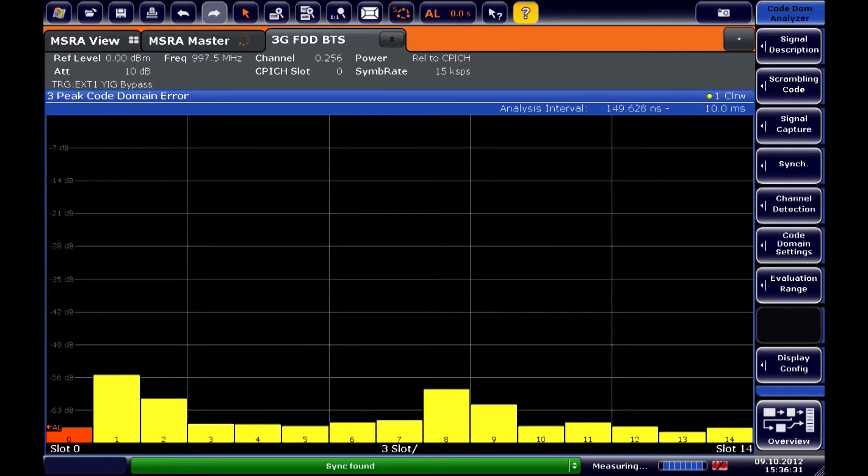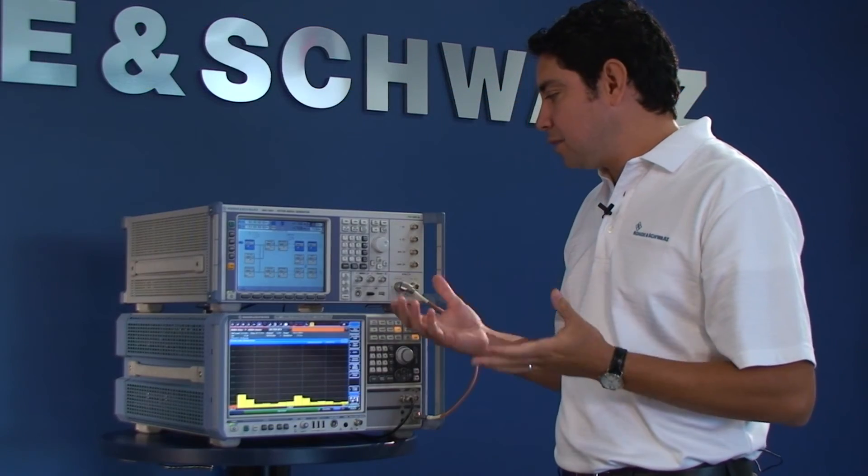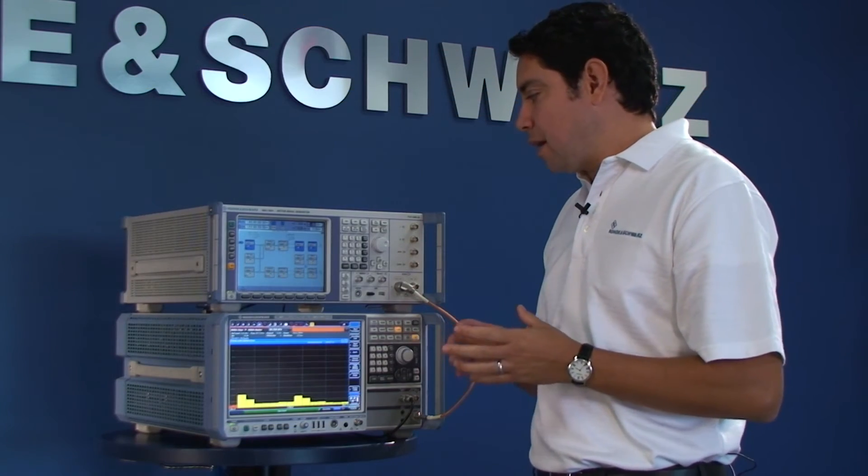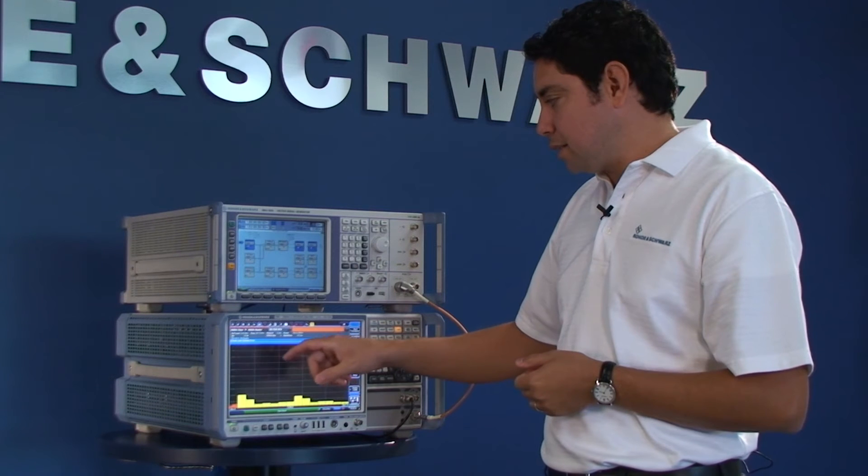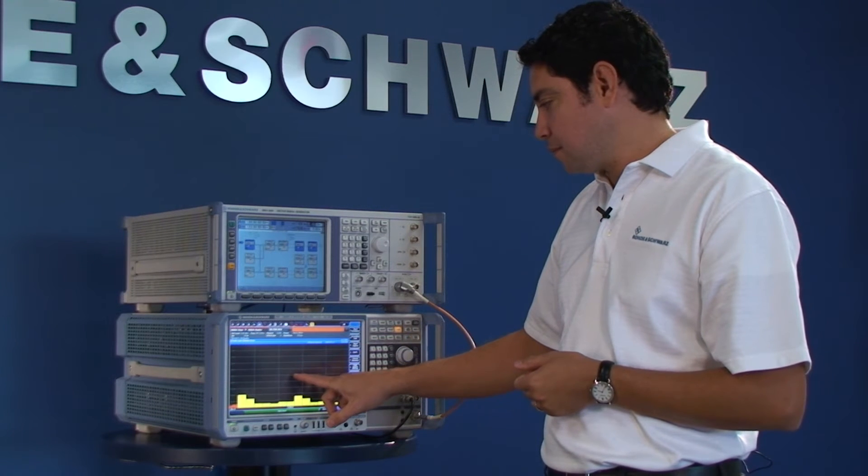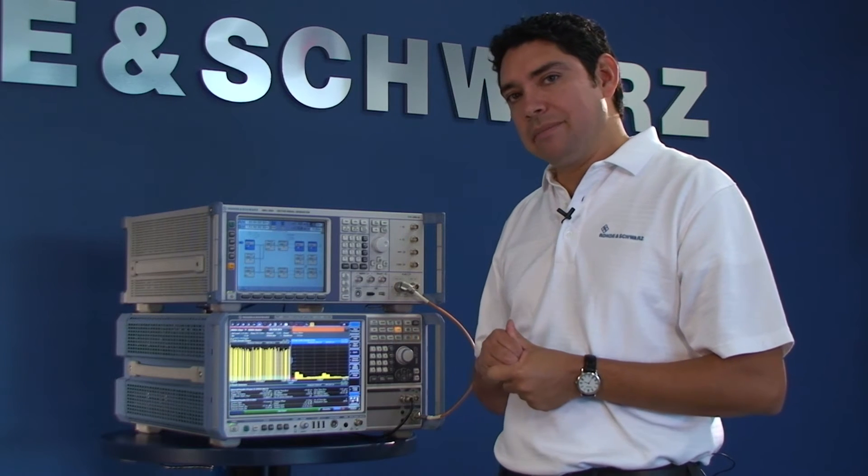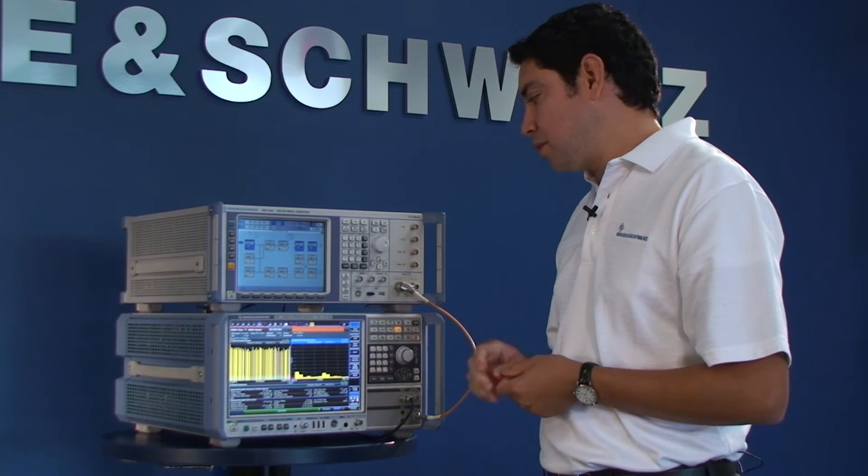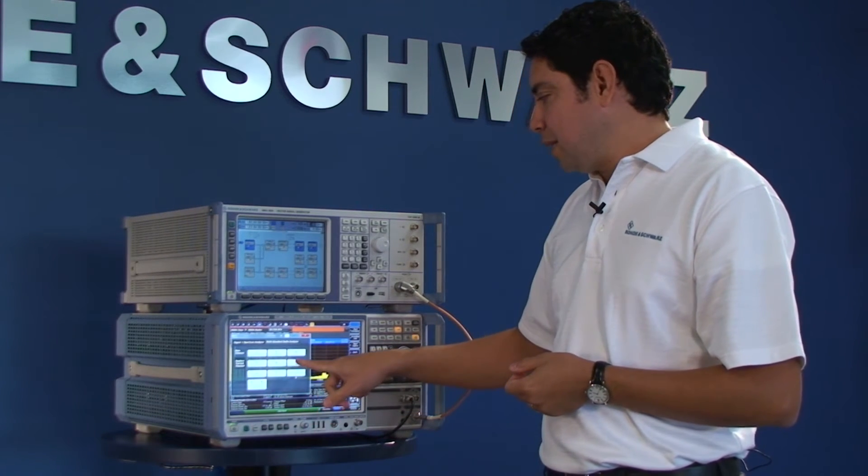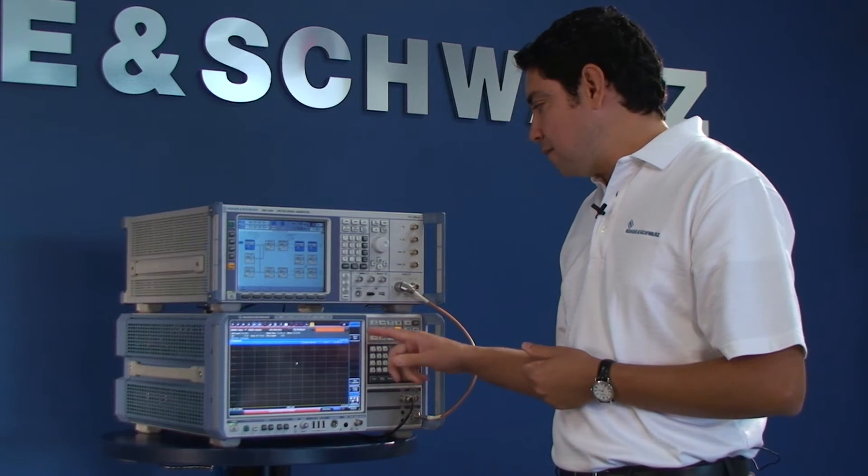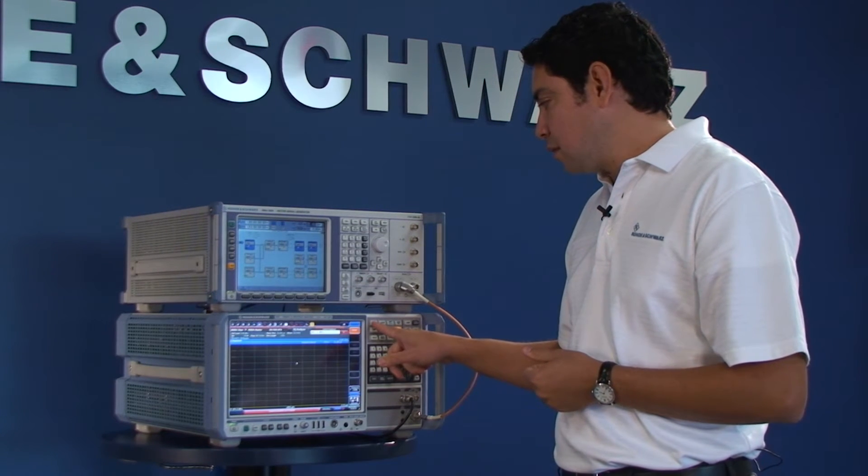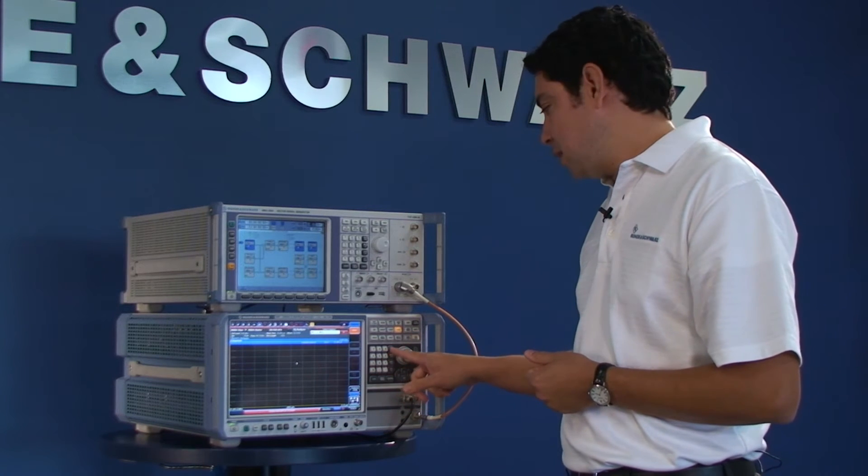Now to understand what that distortion might be coming from, I can do further analysis of the other carriers. First, I suspect my GSM bursting might have something to do with the distortion. So I'm going to enable my general purpose signal analyzer and fine tune it to the frequency of my GSM carrier.